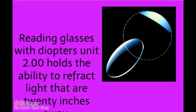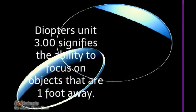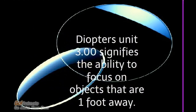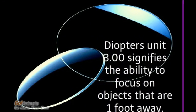Reading glasses with diopters unit 2.00 hold the ability to refract light that are 20 inches away. Diopters unit 3.00 signifies the ability to focus on objects that are one foot away.